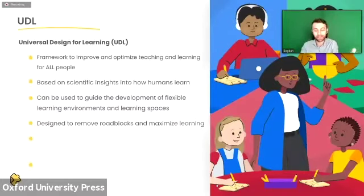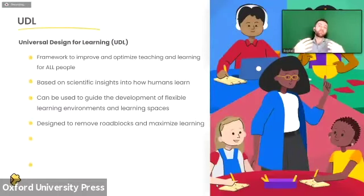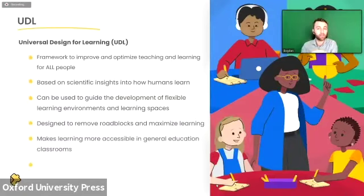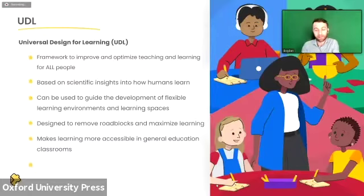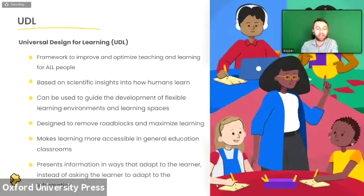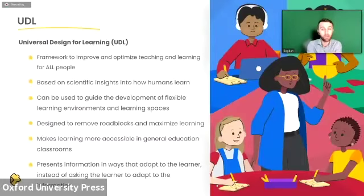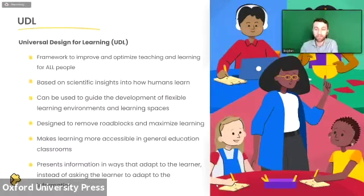UDL is designed to remove roadblocks — one of the main focuses is removing roadblocks for all students and maximizing learning. If you remove roadblocks and make sure that students can get all the information they need and make choices, this will directly impact learning and make it more accessible for everybody in the classroom. A key idea is that you adapt the content, assessment, and everything to the learner, rather than asking the learner to adapt to the information.